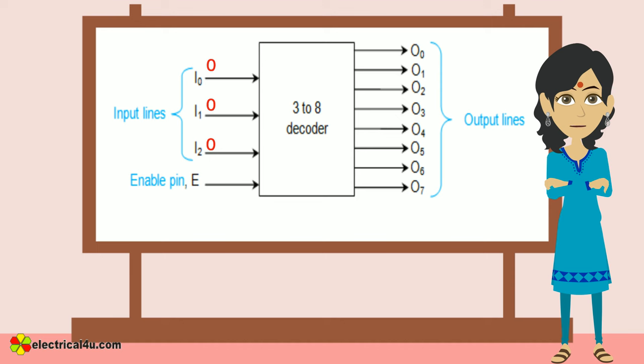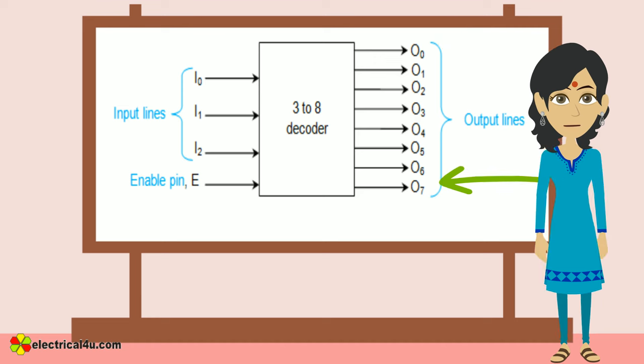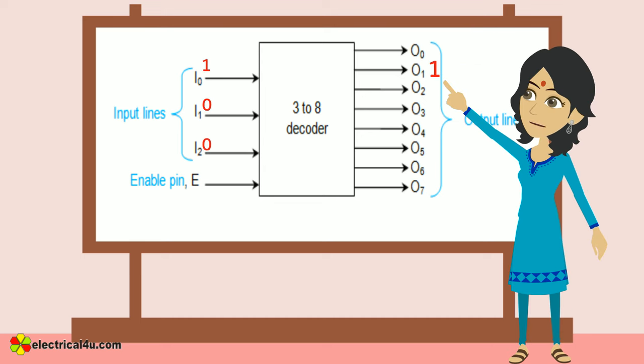Table shows that for the input sequence I2, I1, I0 equals 000, the output pin O0 of the decoder is high, while all other bits, that is O7 down to O1, remain low. Likewise, for the input sequence of 001, only O1 is high. Similar observation shows that only one output line is high for any given input bit pattern.